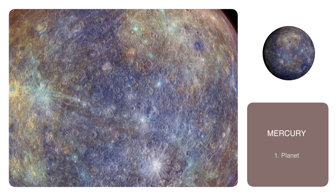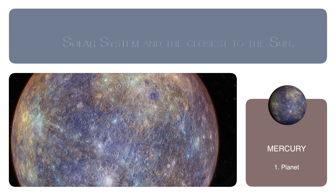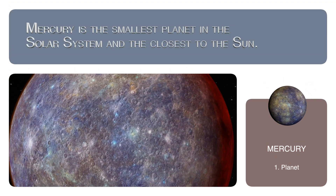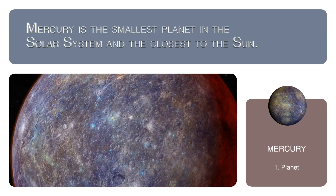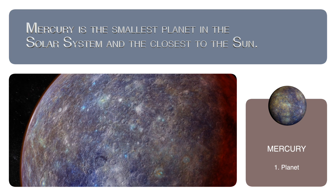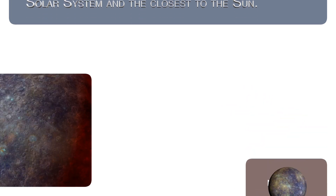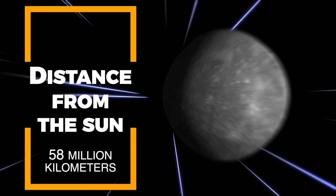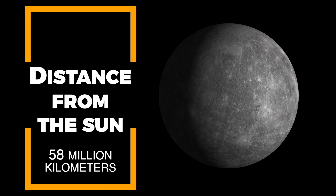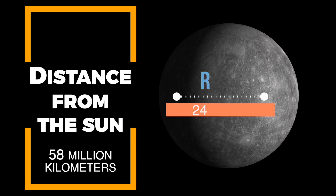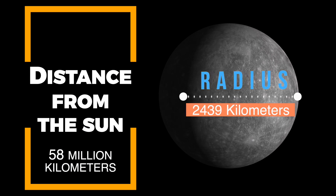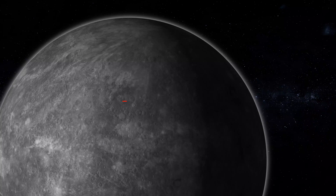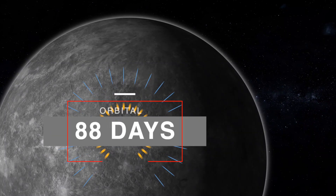Mercury is the smallest planet in the solar system and the closest to the sun, with an estimated age of 4.5 billion years. It is located 58 million kilometers from the sun, with a radius of 2,439 kilometers and an orbital period of 88 days.